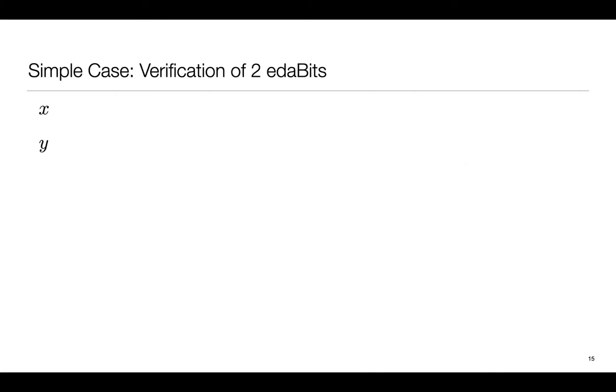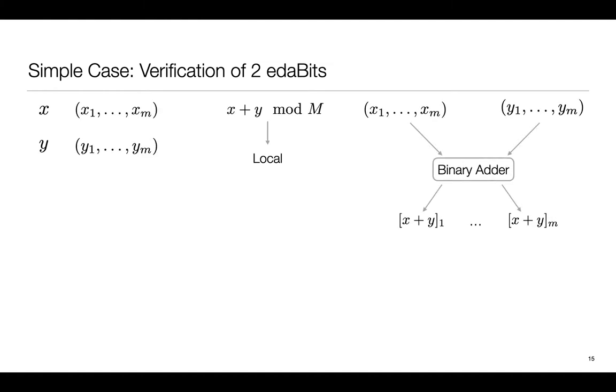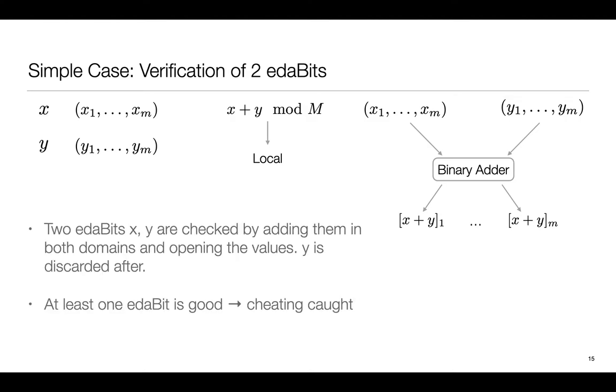First, let's consider the simplest possible case which is verifying just two EDABITS. We verify them by computing the sum over F2 and ZM and opening it. Computing the sum over ZM is local, and for the binary case, we need an adder circuit. The guarantee we have is that if at least one of the EDABITS is good and the triples are good, then cheating will get caught. We need a set of triples for the adder circuit, which we'll get into later.